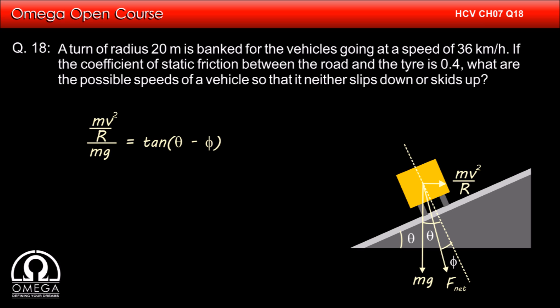Thus, mv square by r divided by mg must be equal to tan theta minus phi. Which implies v square by rg is equal to tan theta minus tan phi divided by 1 plus tan theta tan phi. Or v square is equal to rg tan theta minus tan phi divided by 1 plus tan theta tan phi.